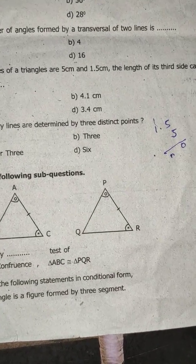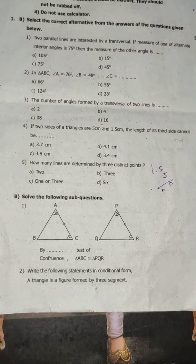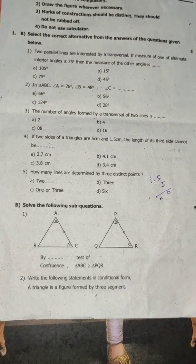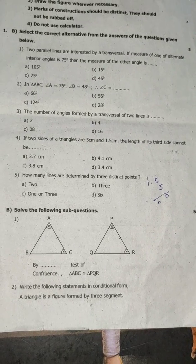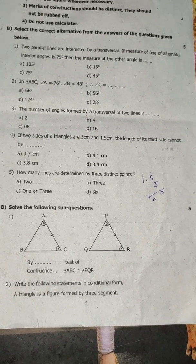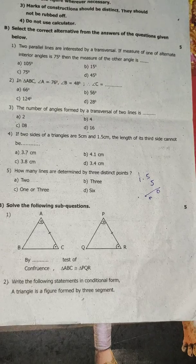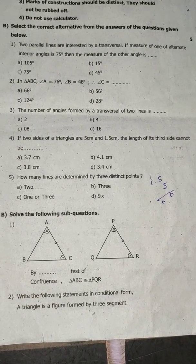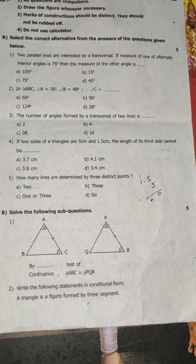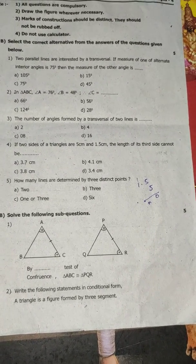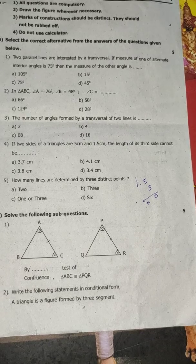The number of angles formed by a transversal of two lines is. Fill in the blanks. If two sides of a triangle are 5 cm and 1.5 cm, the length of its third side cannot be.